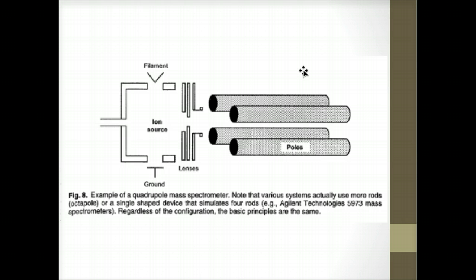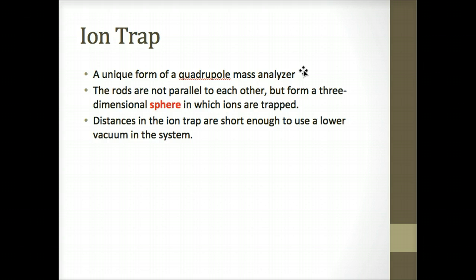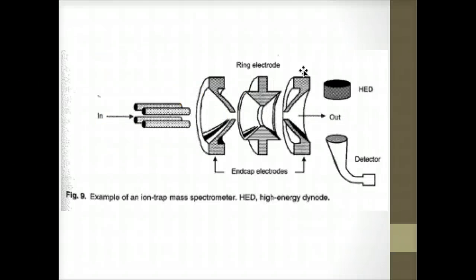Ion trap is the next one on our list. The ion trap is best considered as a unique form of a quadrupole mass analyzer. Instead of being arranged parallel to each other, the four rods form a three-dimensional sphere in which ions are trapped. The trap consists of a central ring electrode and two end-cap electrodes. The distances in the ion trap are short enough to use a lower vacuum in this particular system. And this diagram is trying to show this three-dimensional aspect of this structure of the ion trap spectrometry. And you can see the particles come in and then out.